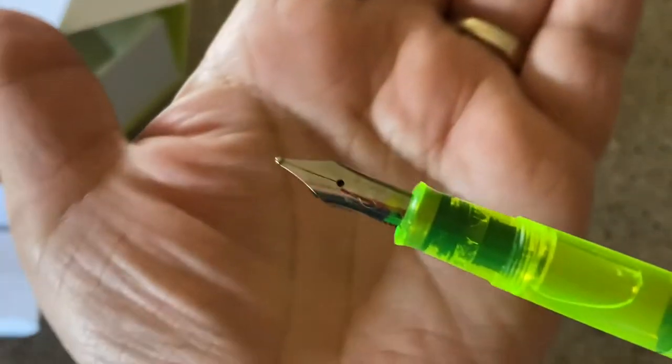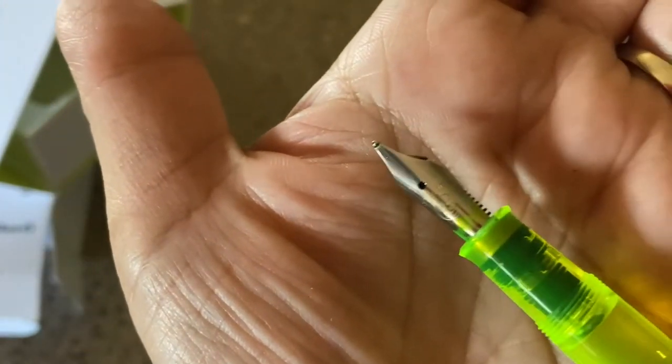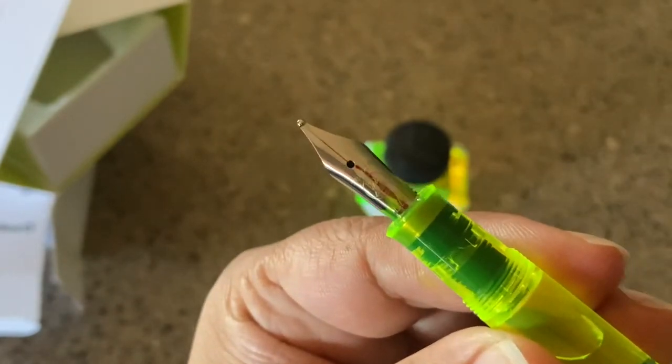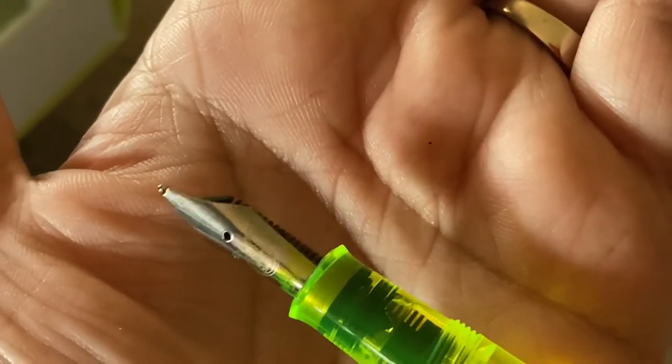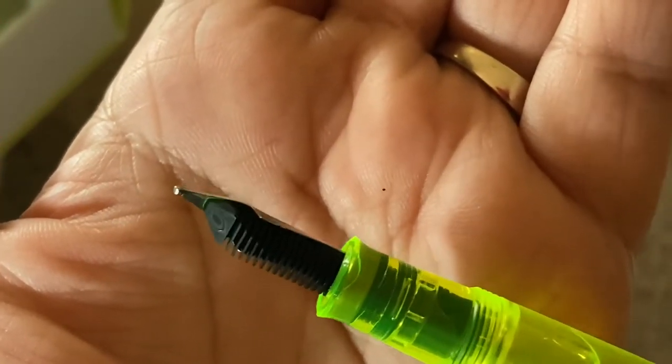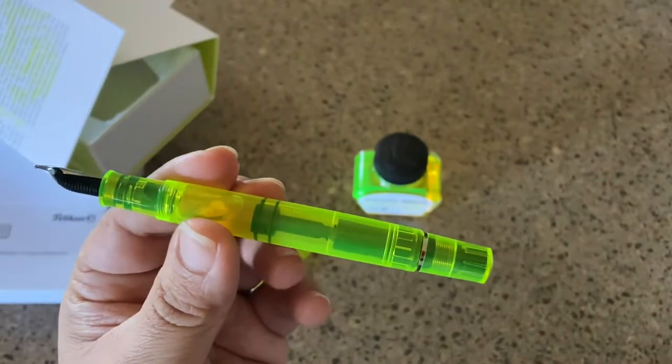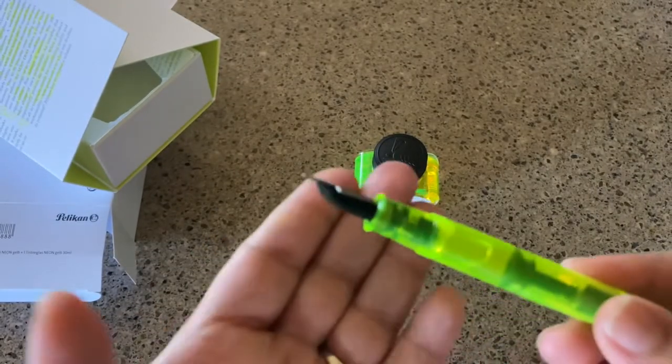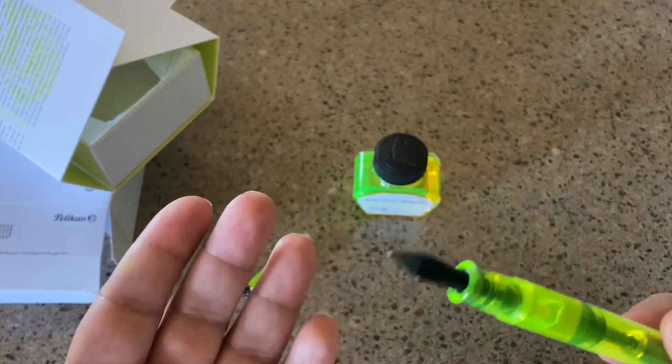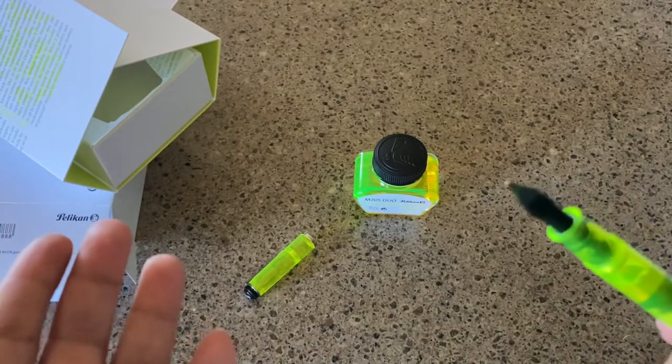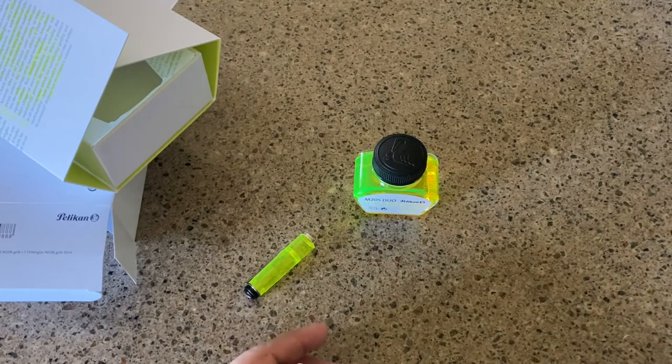On the nib, it's a BB nib—double broad—with a Pelikan insignia, the bird. There's a plastic feed underneath. The body is very cool looking. This came out in 2010, and Pelikan also came out with a green version in 2013.